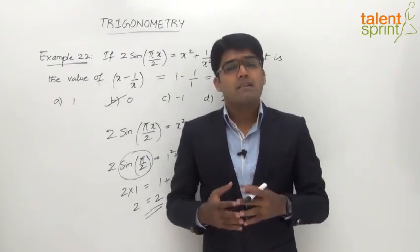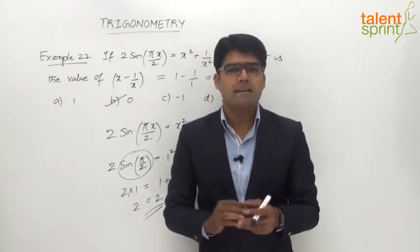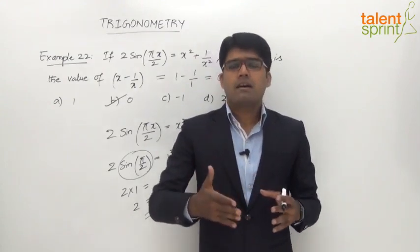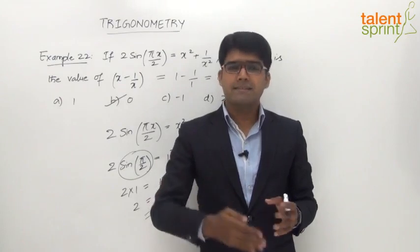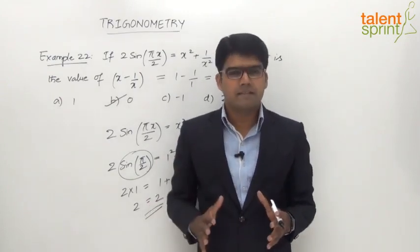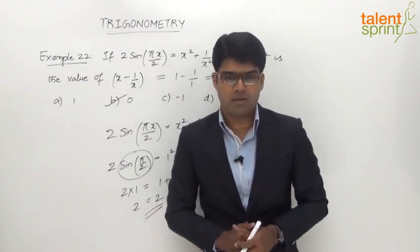Questions involving maximum and minimum values of given trigonometry equations, and also as we have seen through many examples, most of the questions here can be solved by trying out with some random values of the given angle. We can try with some angles, specific angles like 0 degrees, 30 degrees, 45 degrees, 60 degrees, and 90 degrees.